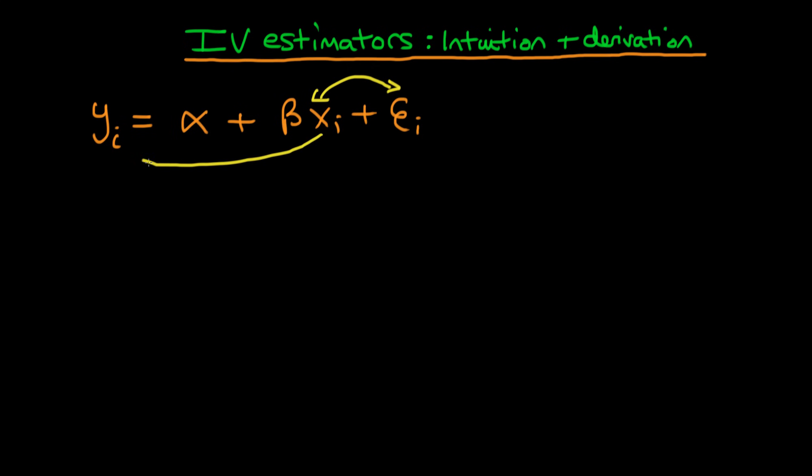Which meant that if x changes, there were two ways which y was changing. One was through x and the other was due to factors contained within the error here.